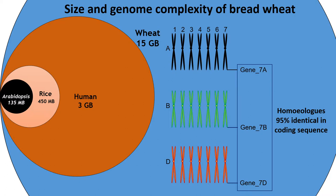To demonstrate that, I'm going to compare the wheat genome to other sequenced genomes you are familiar with. Arabidopsis has a fairly sizable 135 megabases per genome; rice has about 150 megabases per genome; and you and I have about 3 gigabases per genome. But the genome size of wheat is quite massive — it's about 15 gigabases per genome. And you wonder why on earth do people work on this crop.